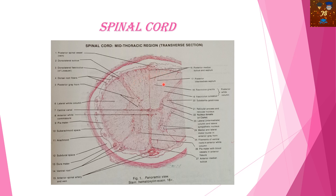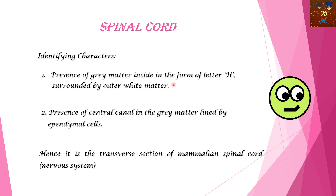These are the two particular identifying characters by which you can identify it as a section of the spinal cord: inside gray matter and outside white matter, along with different types of cells, and the central canal at the center. How to identify the spinal cord: number one, presence of gray matter inside in the H form surrounded by the white matter; and next, the central canal in the gray matter lined by the ependymal cells.